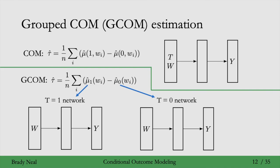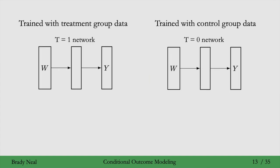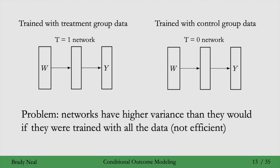So while in regular COM estimation, the single model is fit with all of the data, and none of the control group data. And the second model is fit with all the control group data, and none of the treatment group data. This leads us to the problem that these networks might have higher variance than they would if they were trained on all of the data. Right, we might not be efficiently using our data.